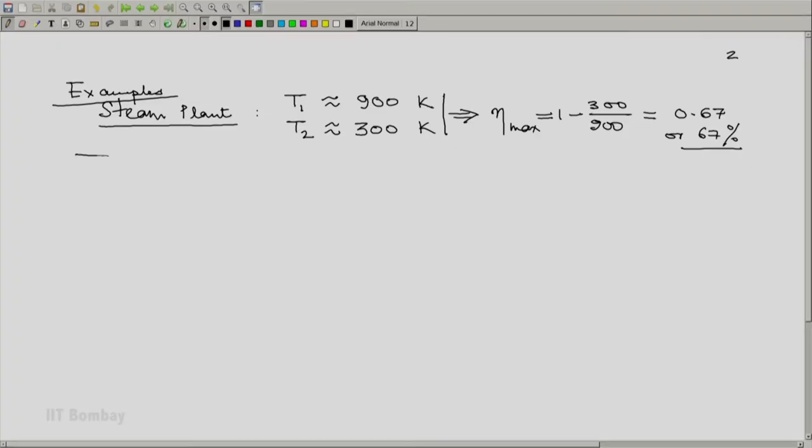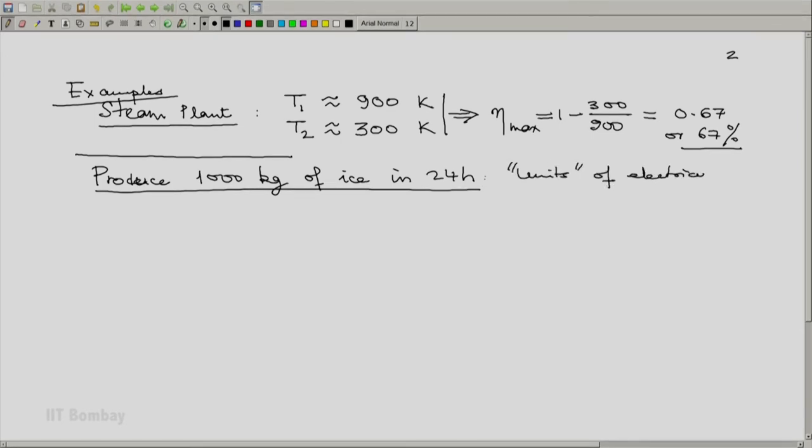Similarly, when it comes to refrigerators, let us determine that we aim to produce 1 ton, 1000 kg of ice in 24 hours. How many units of electricity will be needed? One unit of electricity is 1 kilowatt hour. Now, let us assume that the ice is produced at roughly 0 degree C and that 0 degree C water is available for producing that ice. In that case, the latent heat equivalent to 1000 kg of ice formation will have to be extracted.